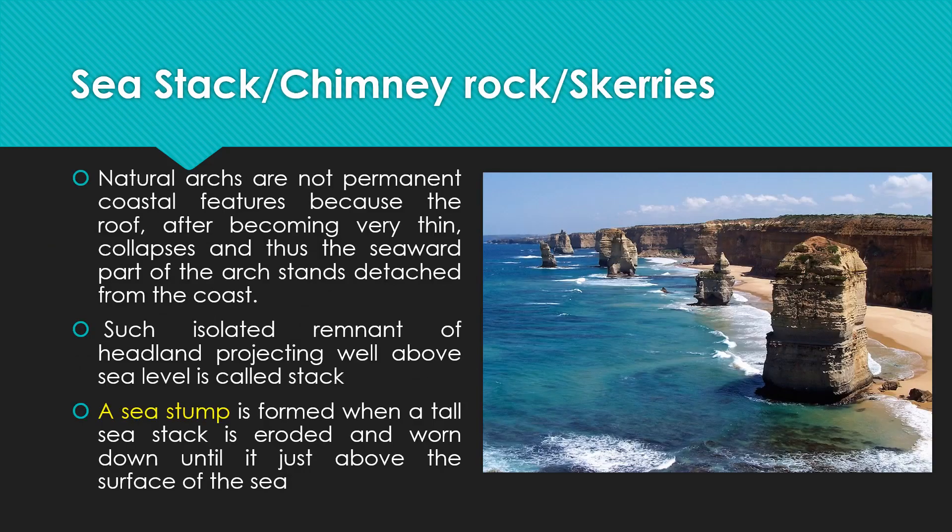Sea stack, chimney rock, or scories. Natural arcs are not permanent coastal features because the roof, after becoming very thin, collapses, and thus the seaward part of the arc stands detached from the coast. Such an isolated remnant of a headland projecting well above sea level is called a stack.